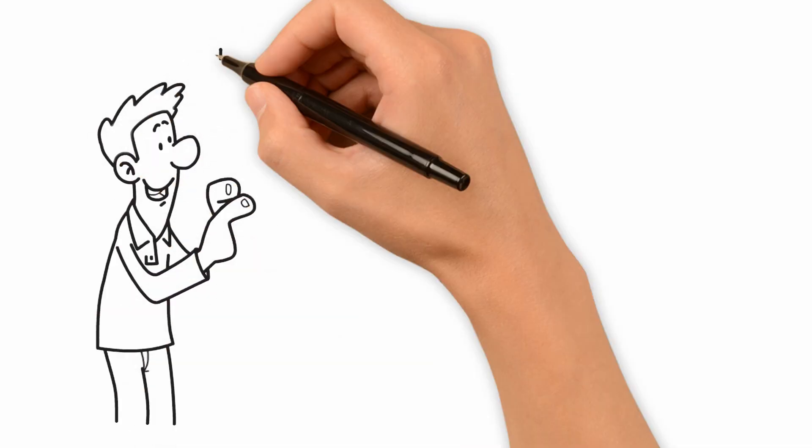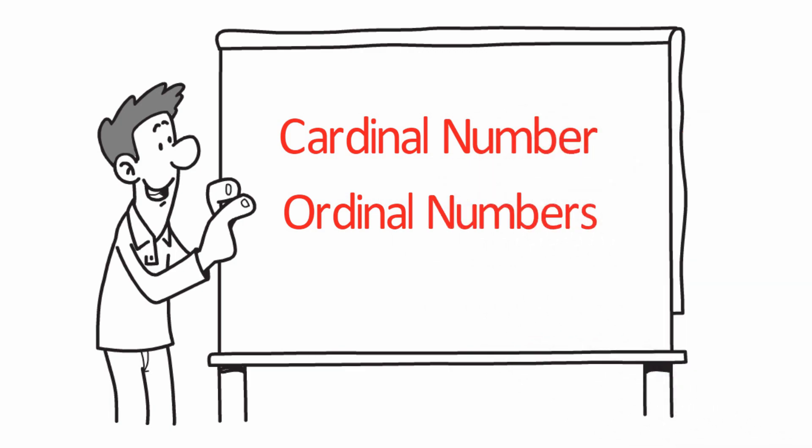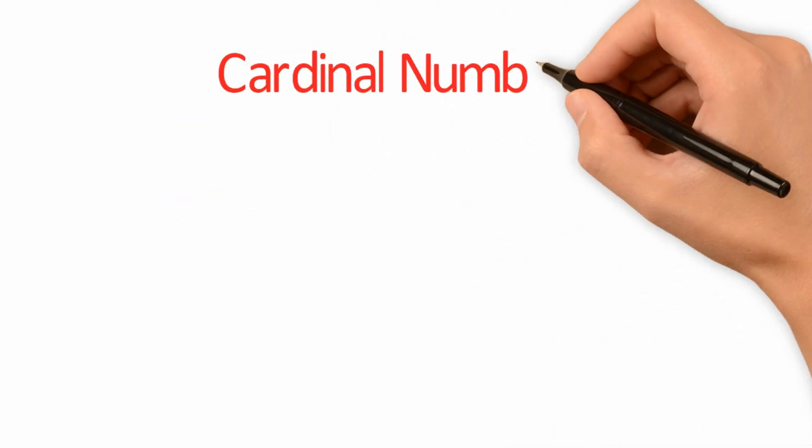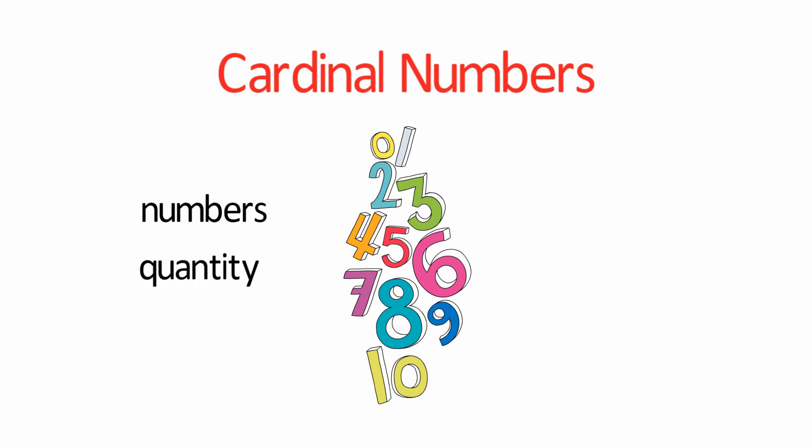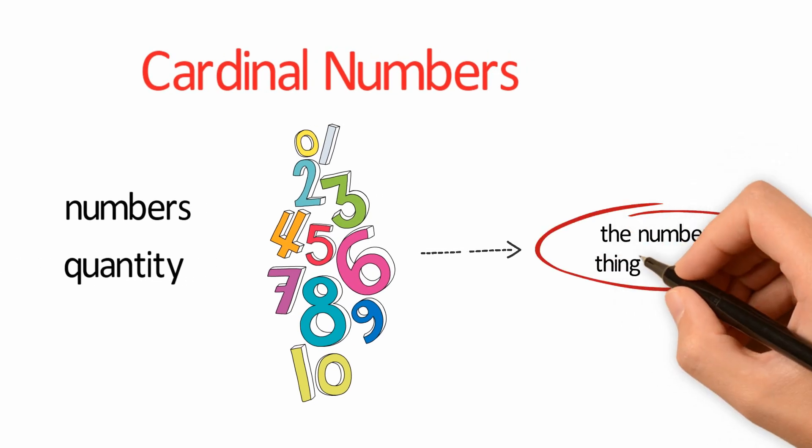In today's lesson, we are going to dive into the world of cardinal numbers and ordinal numbers in English. Cardinal numbers are numbers referring to quantity. They can be used to tell the number of things in a group.